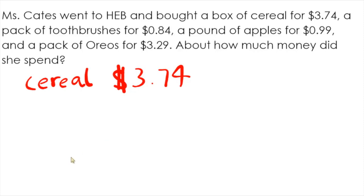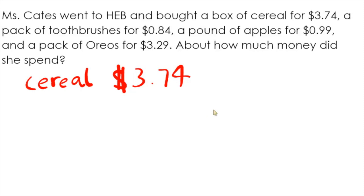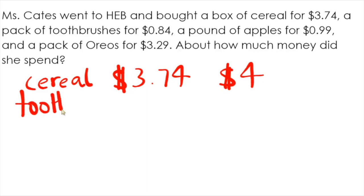$3.74 is either going to be close to $3.00 or $4.00. So $3.74 is actually closer to $4.00. I'm going to write that on the side. Now, she also bought toothbrushes — I'm going to abbreviate that.